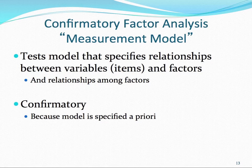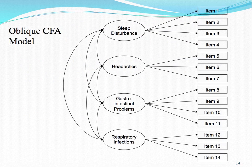In a measurement model, we don't include any direct effects. We don't use bi-directional arrows because we're not specifying any particular direction. CFA is confirmatory in that we specify a model ahead of time. Here's an example of a confirmatory factor analysis model we consider to be oblique, as all latent factors are specified to be related to one another.